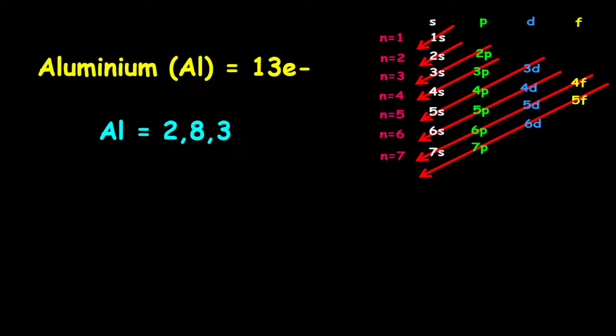2 electrons on the first shell, 8 electrons on the second shell, and 3 electrons on the third shell. Therefore, the electron configuration is given as 2,8,3.